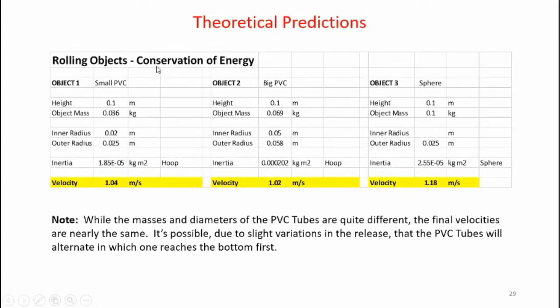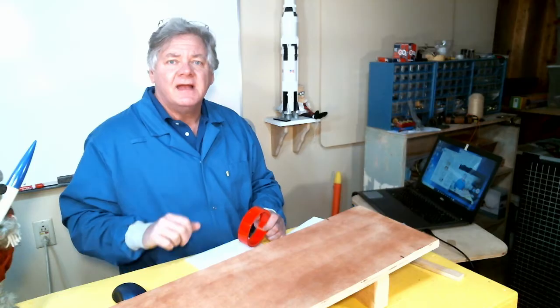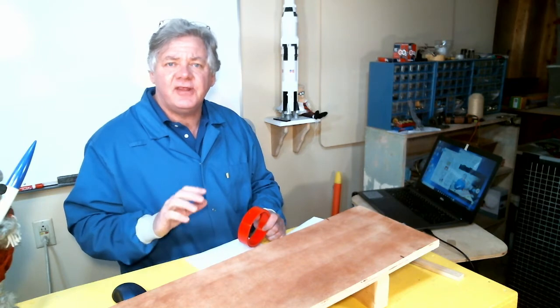I built a spreadsheet to analyze the three test articles: the small PVC tube, the large PVC tube, and the sphere. Here's the parameters that I put in. You notice that the height comes into play, but not the length of the ramp. So a short ramp and a long ramp will have the same end result. It's the height that's the important factor. We see that the small PVC tube at a velocity of 1.04 meters per second, which is very close to the velocity of a large PVC tube, which has a velocity of 1.02 meters per second. And the sphere has the highest velocity of 1.18 meters per second. So it should be pretty obvious that the sphere will get to the bottom of the inclined plane first. It'll be interesting to see what happens to the small PVC tube and large PVC tube.